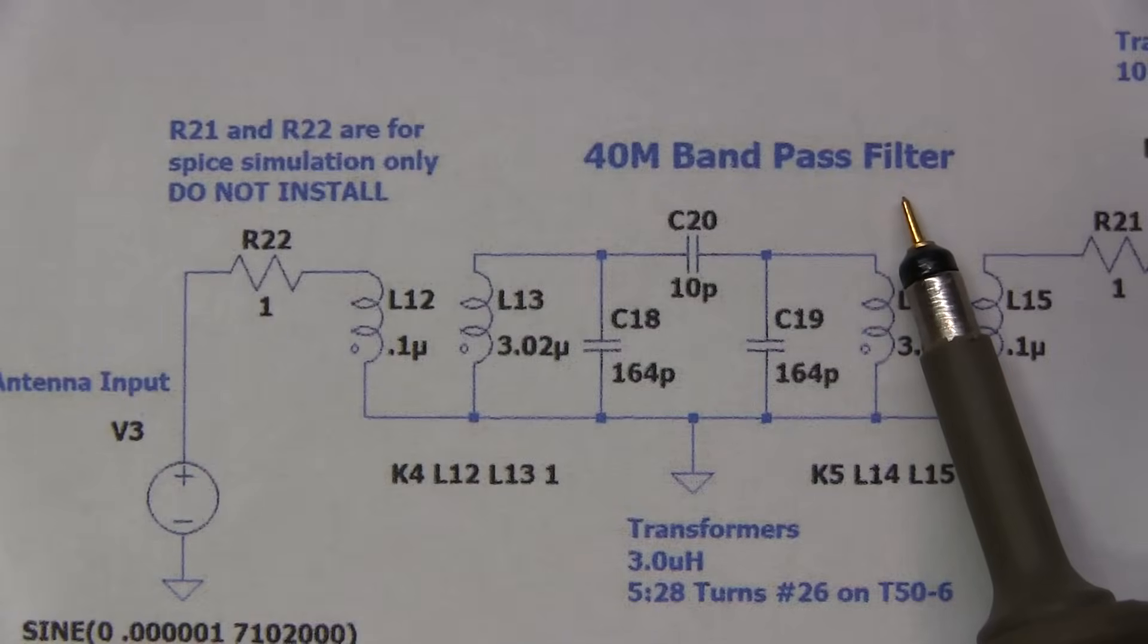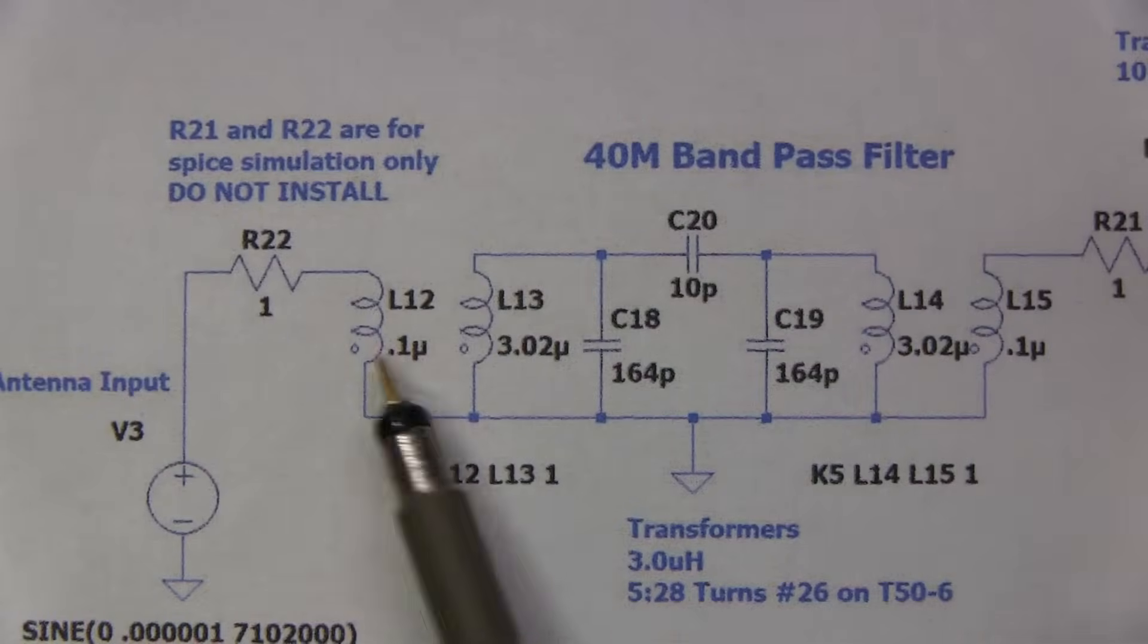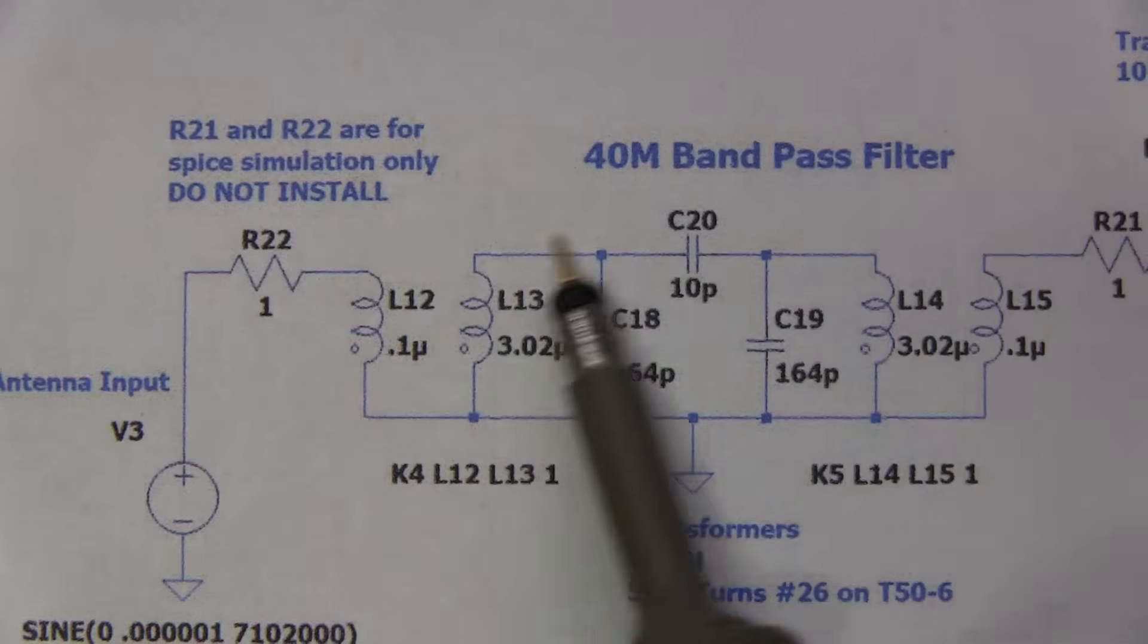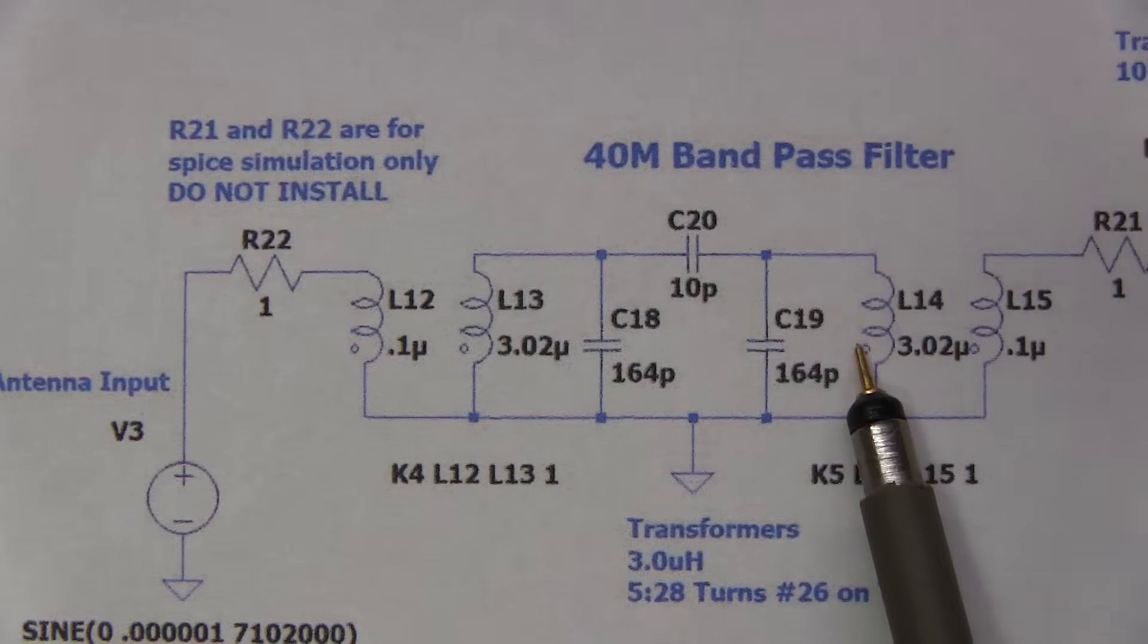The 40-meter bandpass filter just consists of a pair of bifilar wound transformers just to do a little bit of impedance conversion into the filter core, which is simply formed by essentially these transformer turns and this little capacitor network.